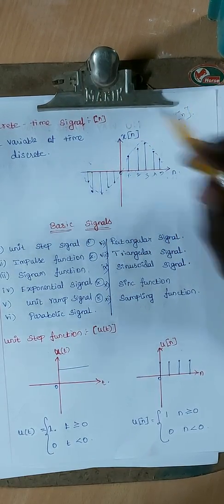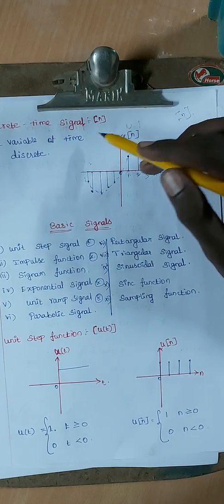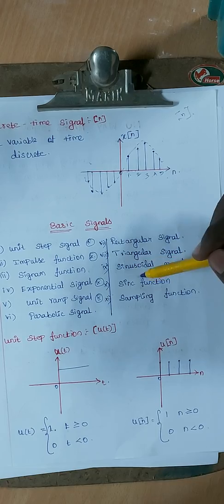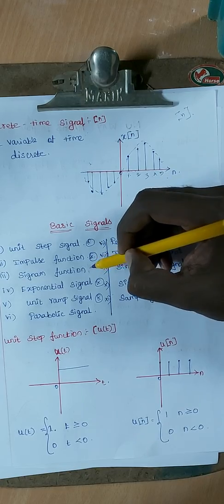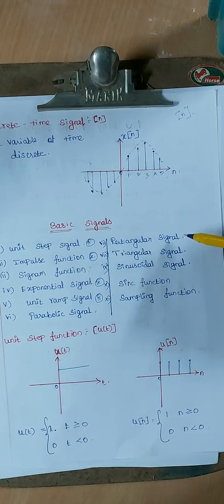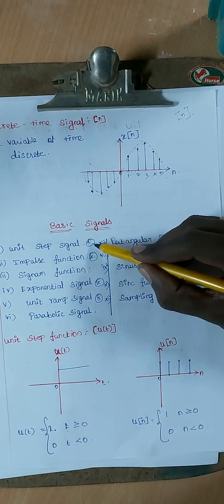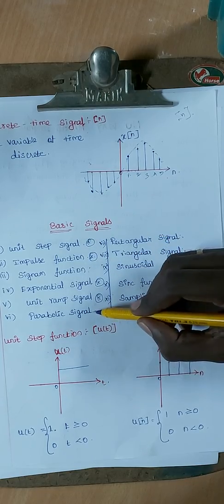The best example of a continuous time signal is an analog signal — all analog signals are continuous time signals. Discrete time signals correspond to digital signals. The basic signal types are 11 signals: Unit Step, Impulse, Signum, Exponential, Unit Ramp, Parabolic, Rectangular, Triangular, Sinusoidal, Sinc, and Sampling functions.